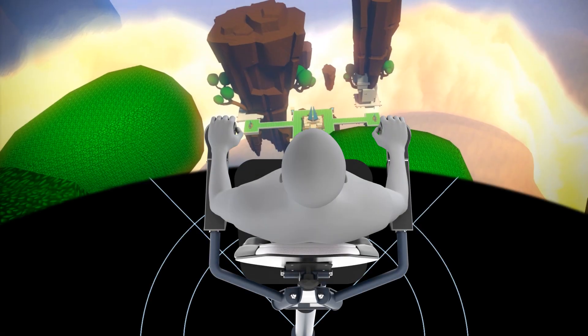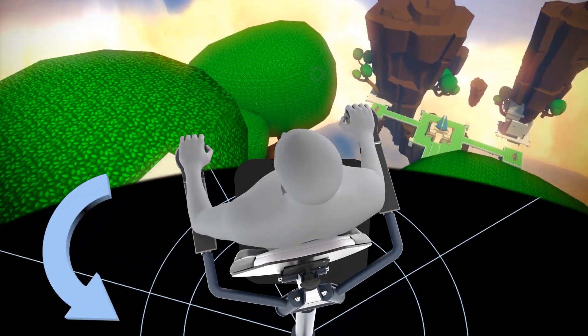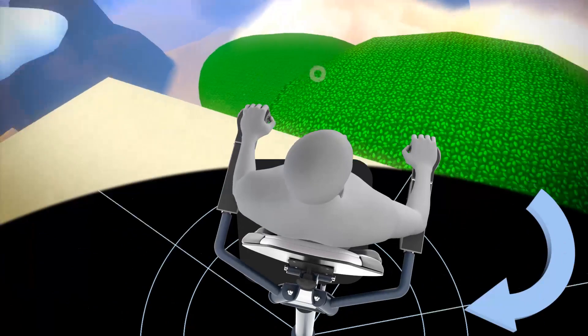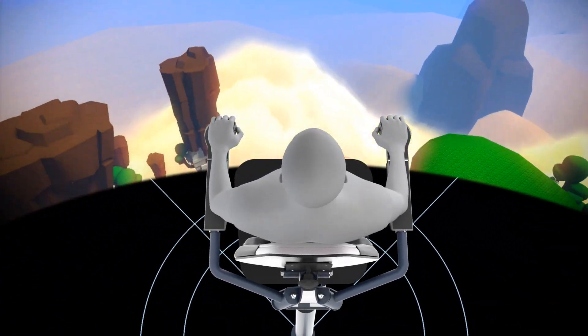The yaw command is achieved by rotating the chair. The head naturally follows the movement of the body, generating a sensation of turn in the vestibular system.